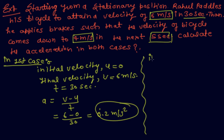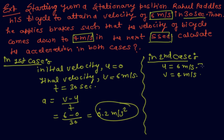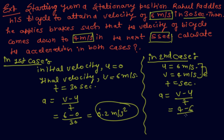In the second case, initial velocity u equals 6 meters per second. Final velocity v equals 4 meters per second because Rahul applied brakes, so velocity decreases from 6 to 4. Time taken is 5 seconds. So acceleration a equals v minus u by t, which is 4 minus 6 by 5, equal to minus 0.4 meters per second squared.